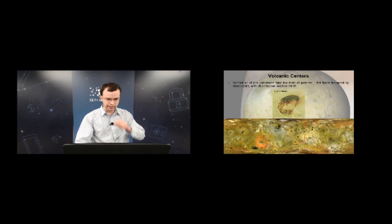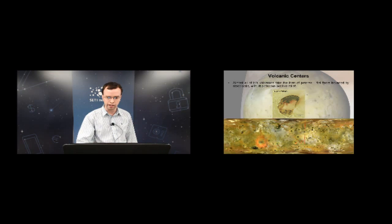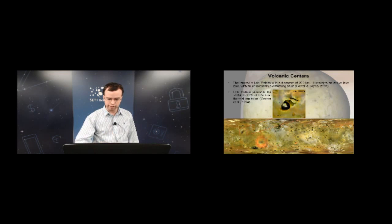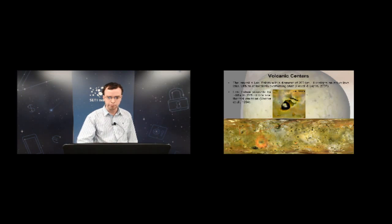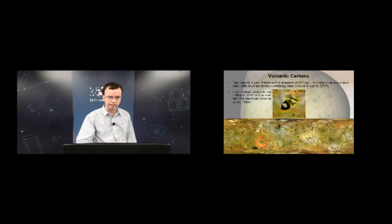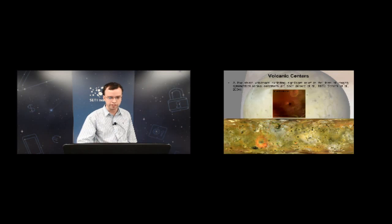The vast majority of IO's volcanic centres are Pateri — caldera-type structures with flat floors bounded by steep walls and very little obvious positive relief. Standing out among these is Loki Patera, with a diameter of 200 kilometres, by far the largest Patera on IO. It has an active lava lake with an episodically overturning crust, accounting for between 10 and 25% of IO's total thermal emission.